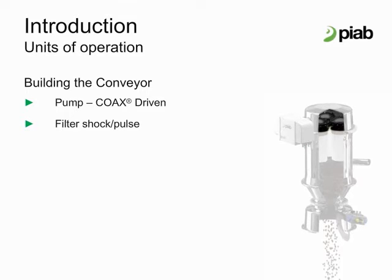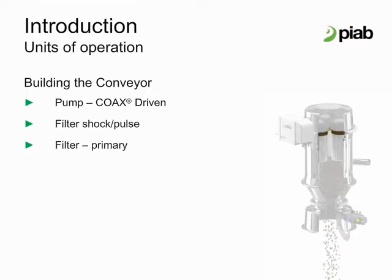The filter shock is a standard item on all of our PIAB conveyors. The one constant here is the 1-to-1 ratio — for each filter membrane we have, we have a dedicated shock tank for that filter. The filter type and size are also determined by the material's characteristics, the particle size, and the flow rate requirements.